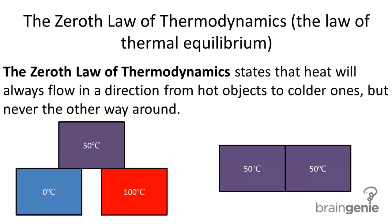The zeroth law of thermodynamics, otherwise known as the law of thermal equilibrium, states that heat will always flow in a direction from hot objects to colder ones, but never the other way around.